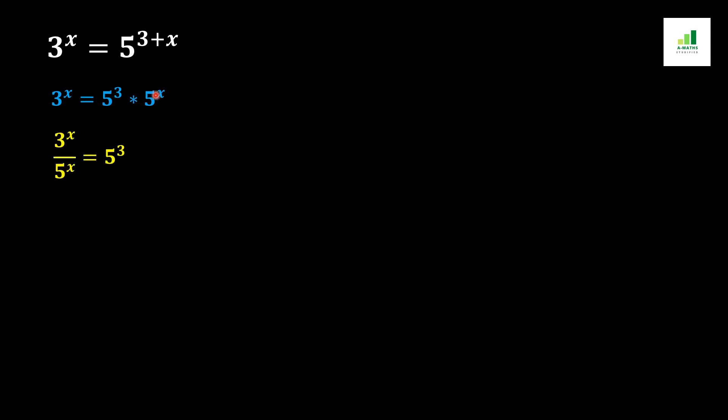Now in the next step, this 5 to the power x will go in division to the other side of the equation and it will divide 3 to the power x. As a result we will get 3 to the power x over 5 to the power x. On the other hand, 5 to the power 3 will remain on the right side of the equation.